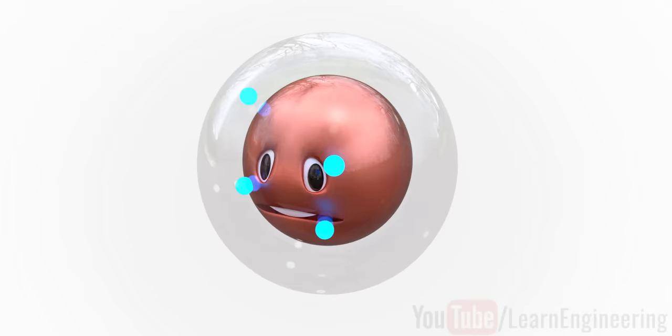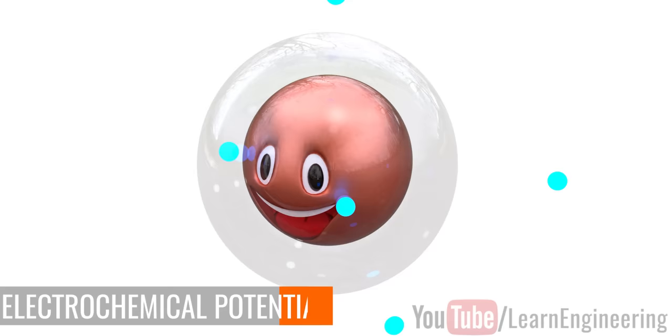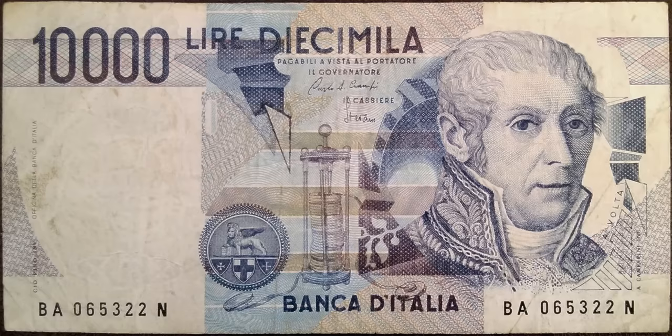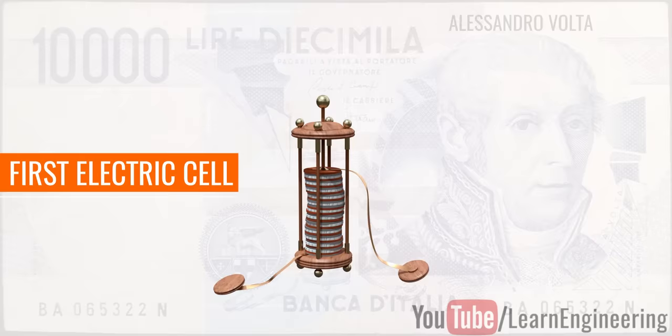Electrochemical potential is the tendency of a metal to lose electrons. In fact, the very first cell, developed by Alessandro Volta more than 200 years ago, was based on the concept of electrochemical potential.